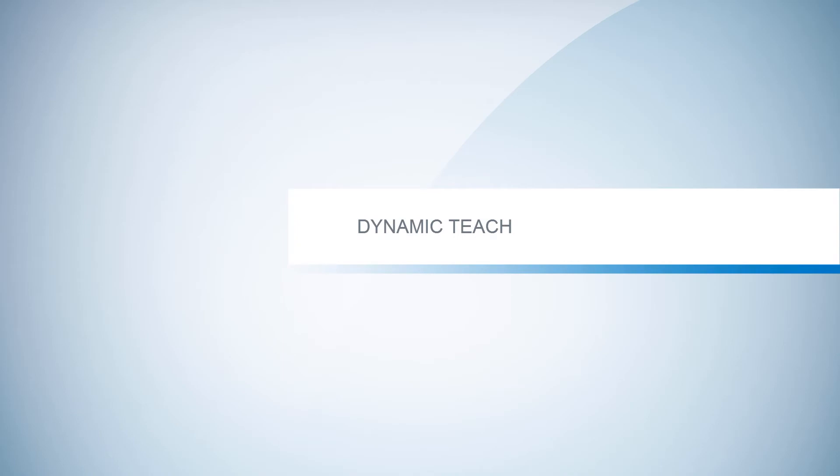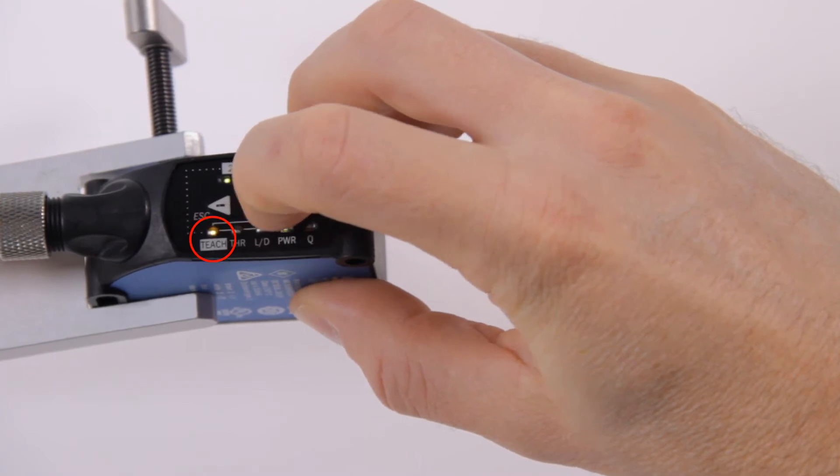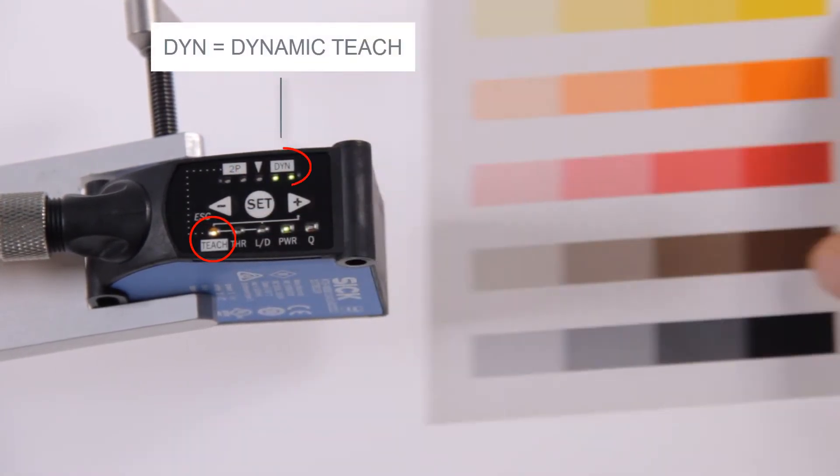Dynamic teach. For the dynamic teach select teach again and then select DYN for dynamic teach. Move the print mark under the light spot and press SET.